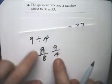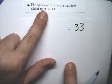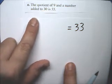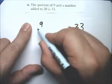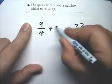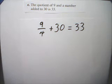9, that's the quotient of 9 and a number. So the quotient of 9 and a number added to 30. Quotient of 9 and a number added to 30 is 33.